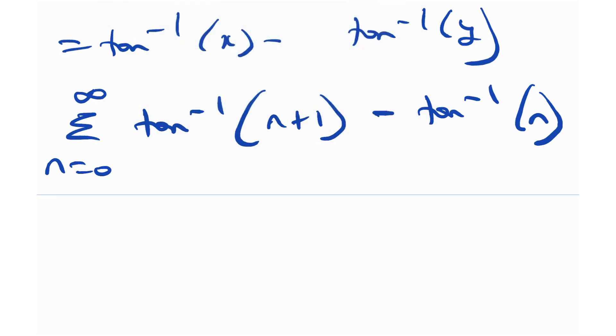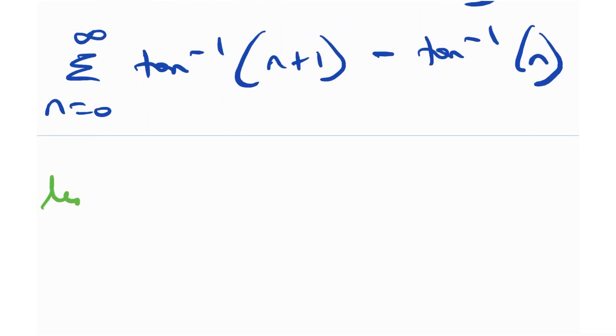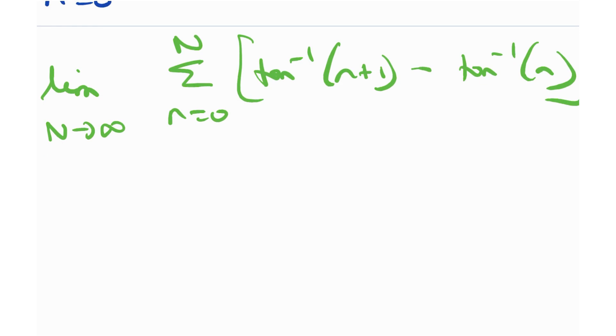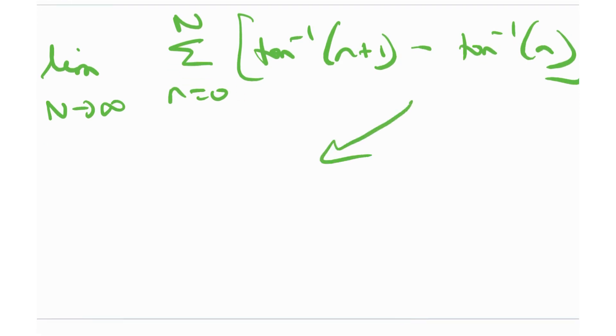So what I can do is I can take the limit as capital N tends to infinity. And I can write this as summation n is equal to 0 to N tangent inverse n plus 1 minus tangent inverse n. And I can write it just like this. So instead of having an infinity, I can just take it that it's going up to N. And once you've come to here, you can really easy see that this sum actually telescopes really nicely. Because if you just write it out.